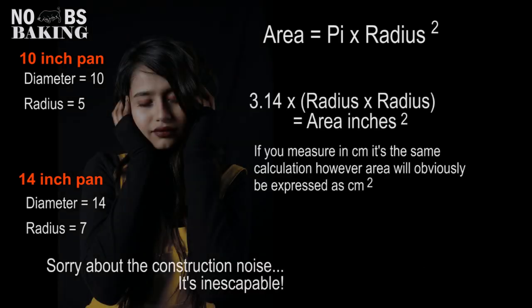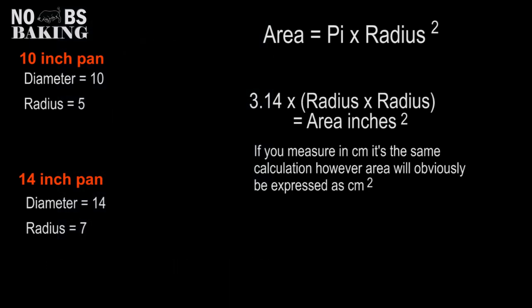So now it's time to calculate the total area of the pans. Radius is squared so always start by multiplying these two together first, thus the brackets, and then multiply by pi or 3.14.